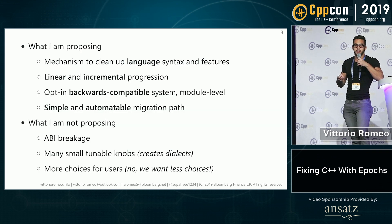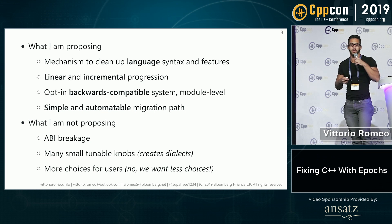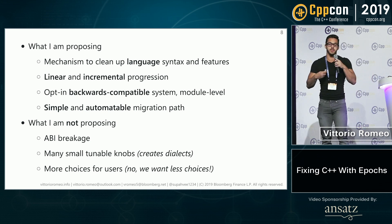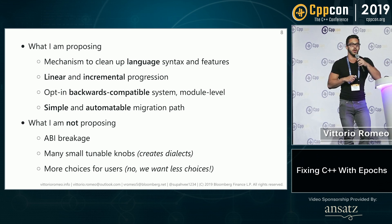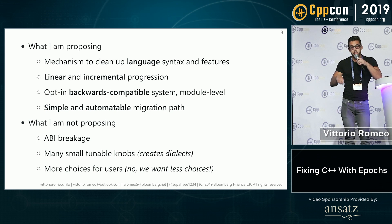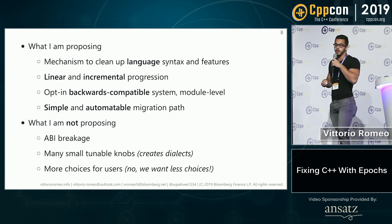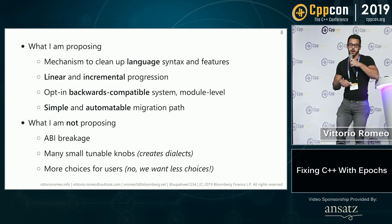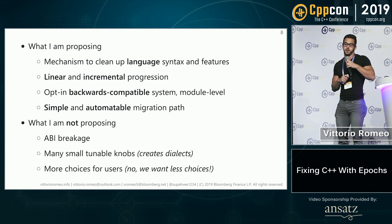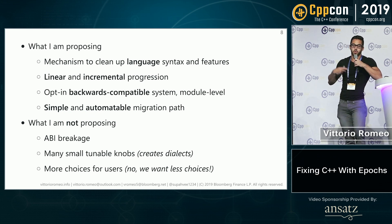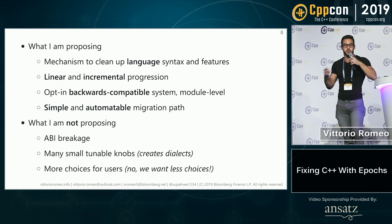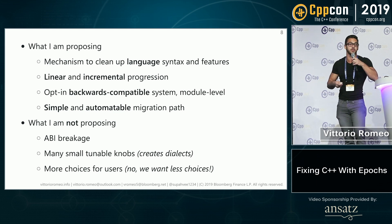What I'm proposing is just a mechanism to clean up language syntax and features. It will have a linear and incremental progression. It will have an opt-in backwards compatible system based on modules. And it will provide a simple and possibly automatable migration path. What I'm not proposing is anything to do with ABI — this is not about breaking the library or changing ABI. I don't want many small tunable knobs; I want a linear and incremental progression. I don't want to create dialects, and I don't want to give users more choices on how to do the same thing. I want to restrict the choices into something that works everywhere and is more uniform.